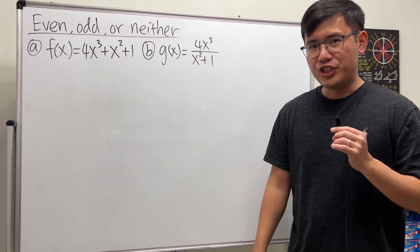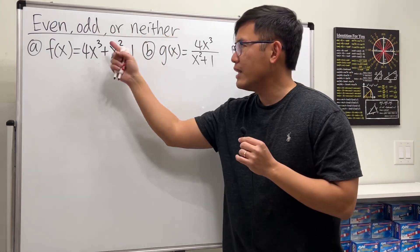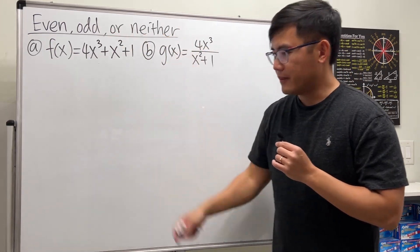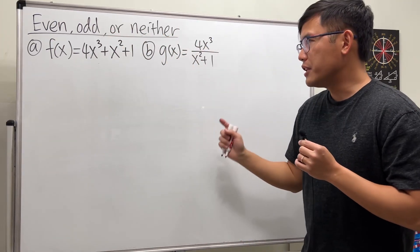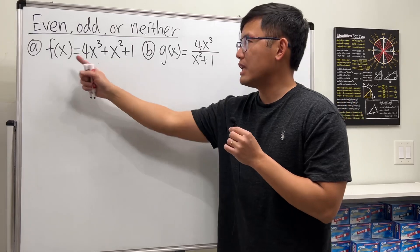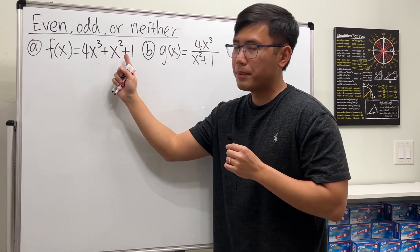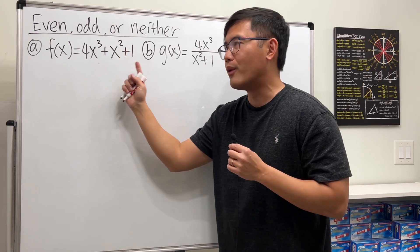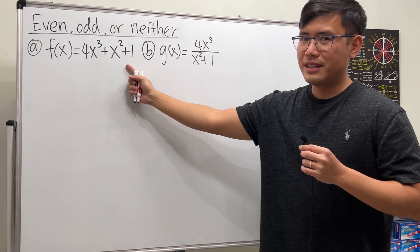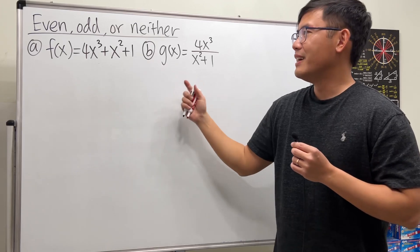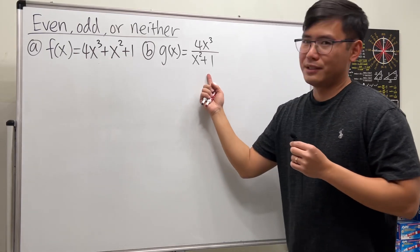Here we are going to see how to check if a function is even, odd, or neither. We have two functions: the first one is f of x equals 4x to the third power plus x squared plus one, and for the second function I just put those two terms on the bottom.